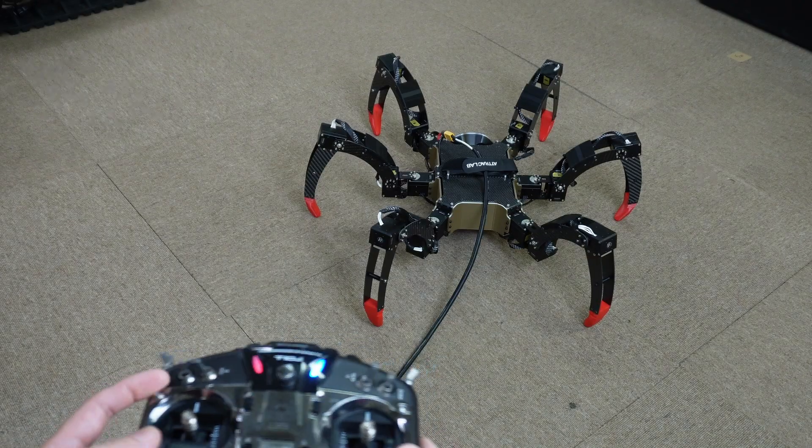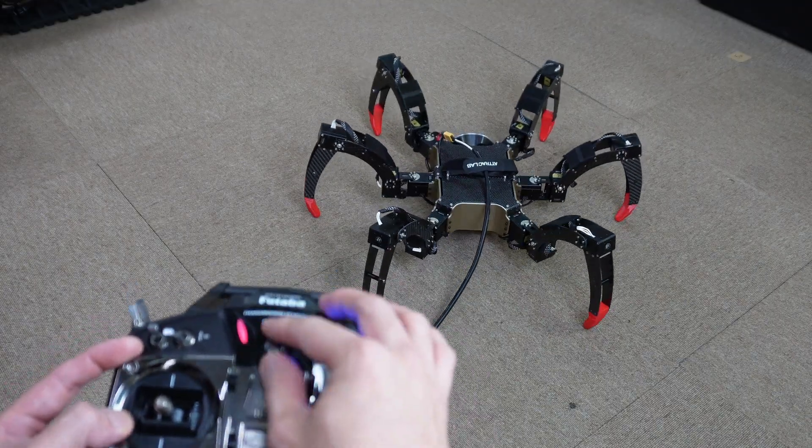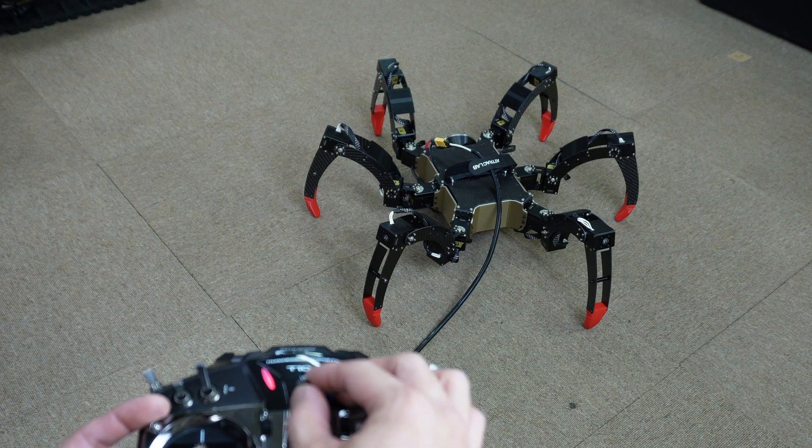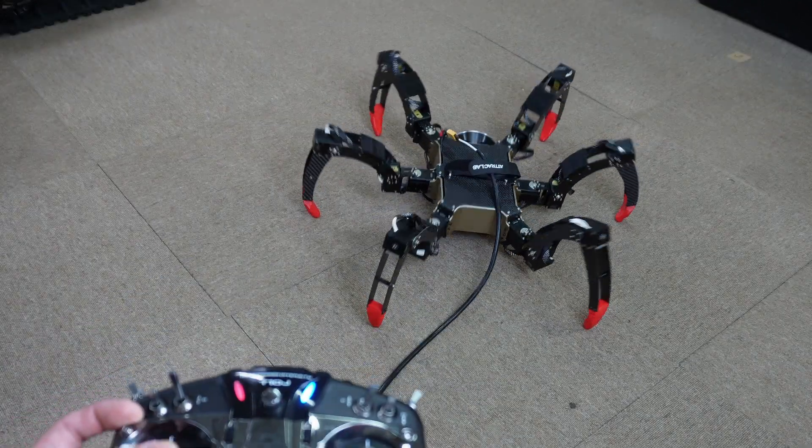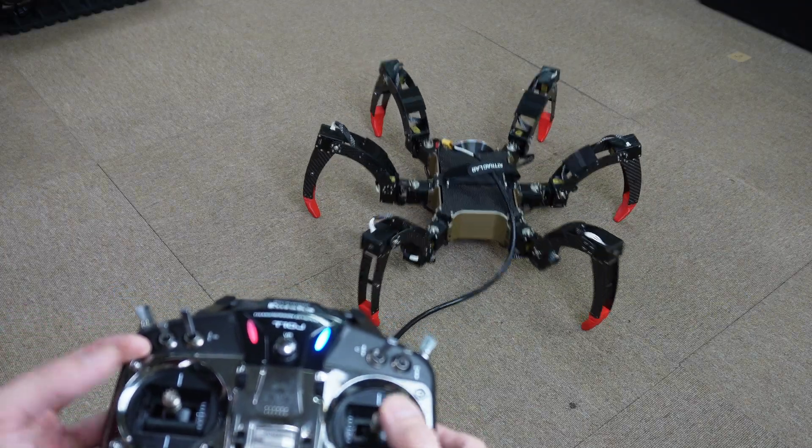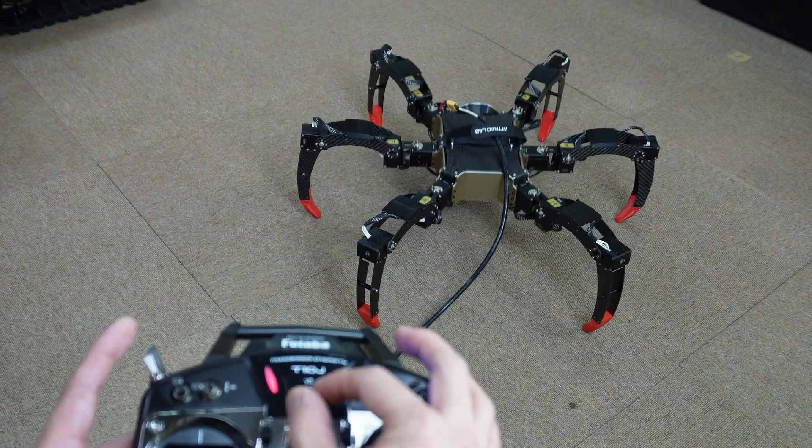Or now, we are going to do body control by switching channel 7 to mid. Then I can send roll pitch yaw and XYZ commands to the robot. With full rotation or full translation or even combining all of them all together, we can have a full control on the robot body.